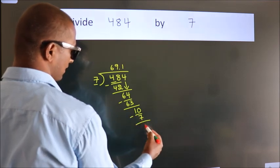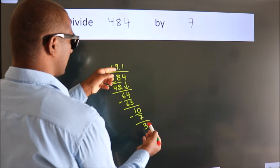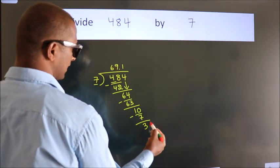Now, we subtract. We get 3. After this, we already have the decimal, so directly take 0.